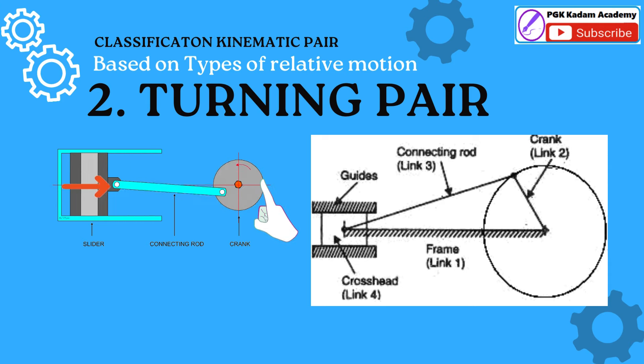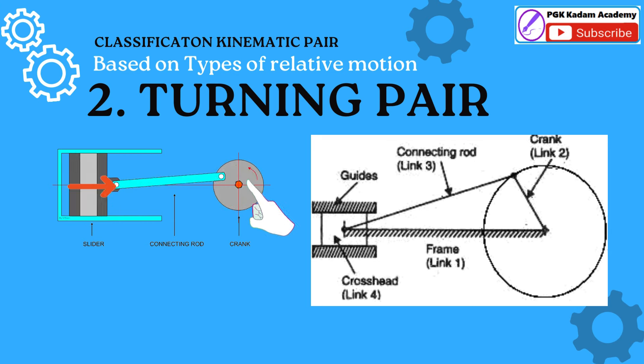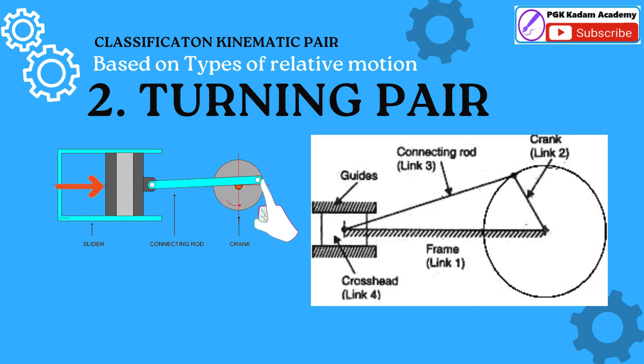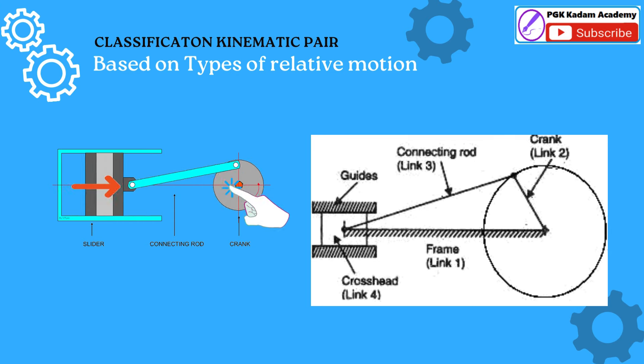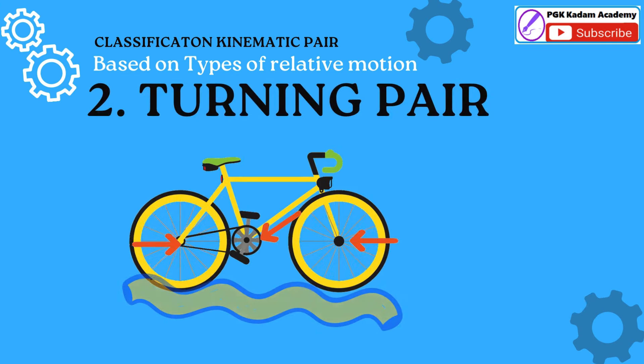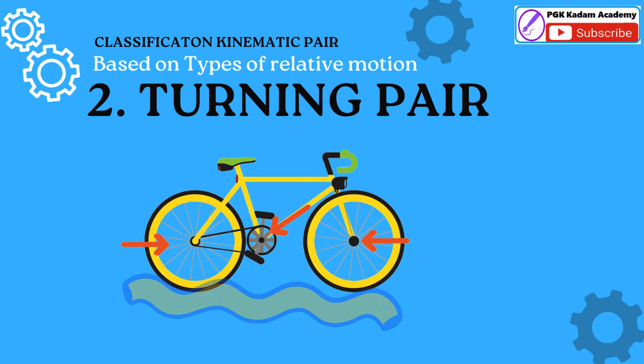Slider, link 4, reciprocates relative to ground, link 1, and forms a sliding pair. Another example of a turning pair is a cycle wheel revolving about its axle.